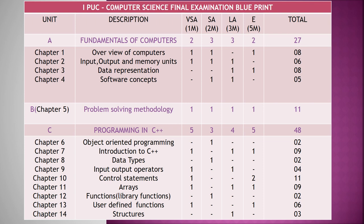The first unit is Unit A — Fundamentals of Computers. In this unit you will have one mark question: two, two mark questions: three, three mark questions: three, and five mark questions: two. Overall this unit consists of 27 marks. Unit A covers four chapters. The first chapter is Overview of Computers, which consists of one one-mark question, one two-mark question, and one five-mark question, carrying eight marks.